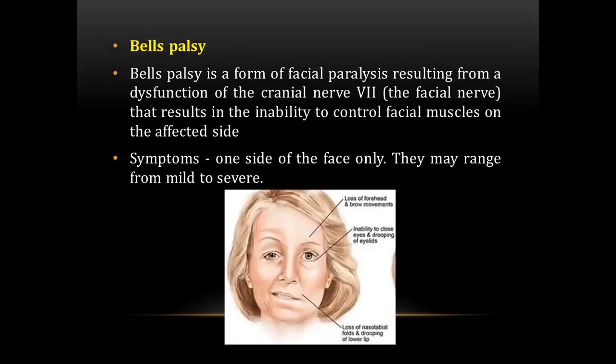The next question was about Bell's palsy. They gave an image showing the signs and symptoms of Bell's palsy. Bell's palsy is a form of facial paralysis resulting from a dysfunction of cranial nerve 7, the facial nerve, that results in the inability to control the facial muscles on the affected side. Symptoms are visible only on one side of the face and may range from mild to severe.